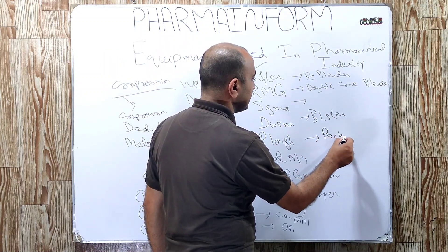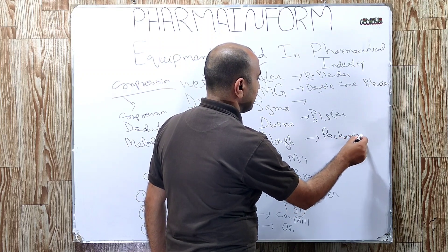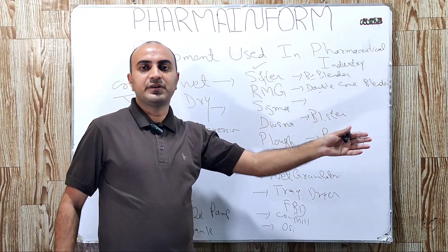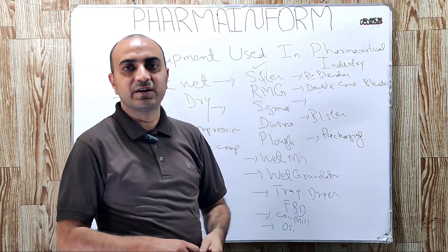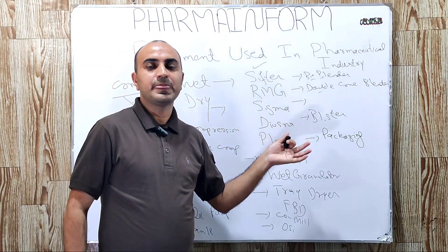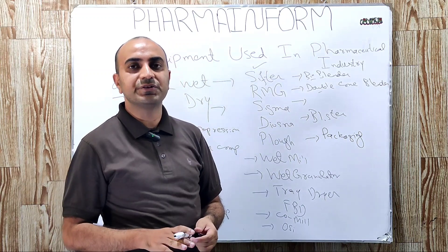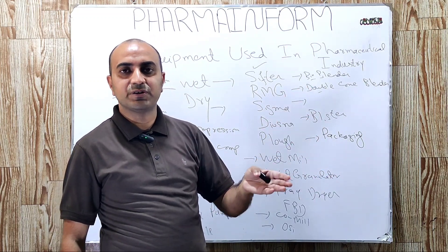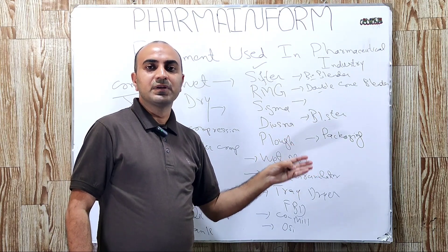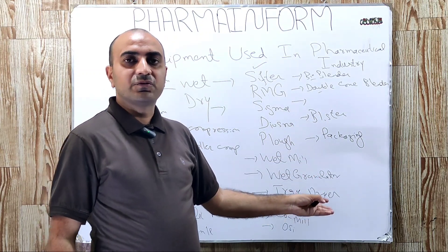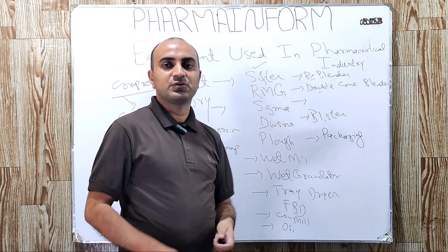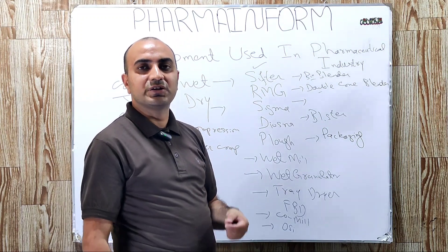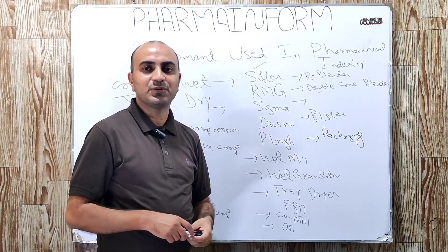After blistering, we have the packaging activity. Most pharmaceutical industries perform packaging where blisters are inserted into unit cartons along with the leaflet. This activity is usually performed manually, but many pharmaceutical industries use cartoning machines where the unit carton opening, insertion of the leaflet and blister, and closing of the unit carton are all done automatically. These are all the equipment commonly used during tablet manufacturing. If you like the video, share it with others. Allah Hafiz.